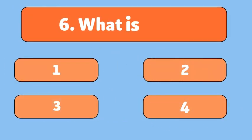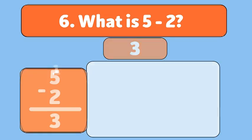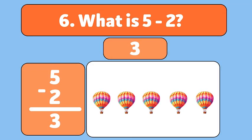What is 5 minus 2? The answer is 3! We start with 5 hot air balloons and take away 2. Let's count! 1, 2. Now we have 3 hot air balloons left!